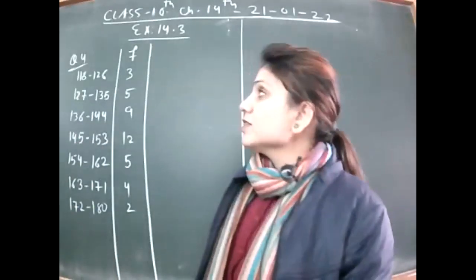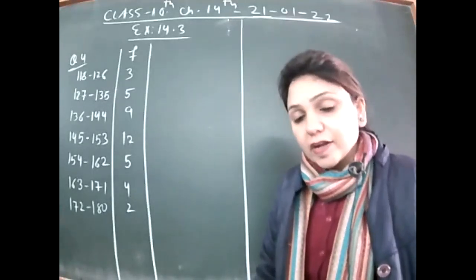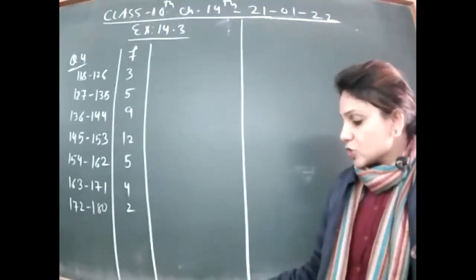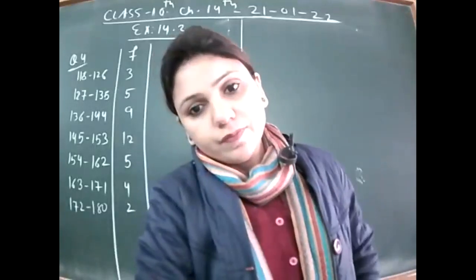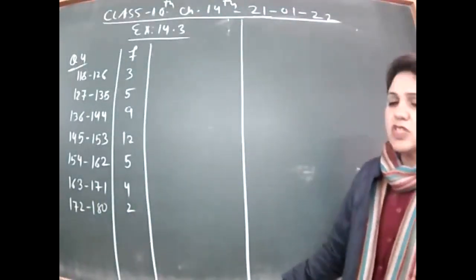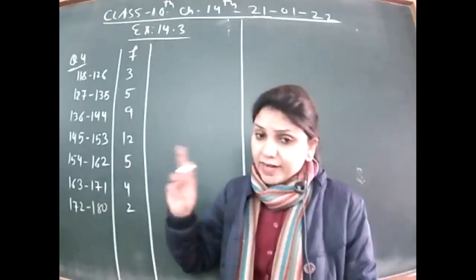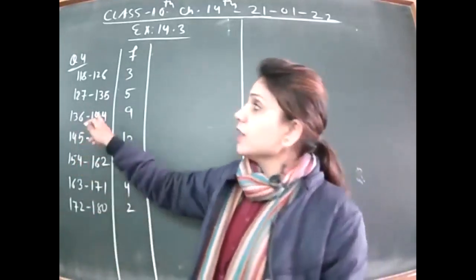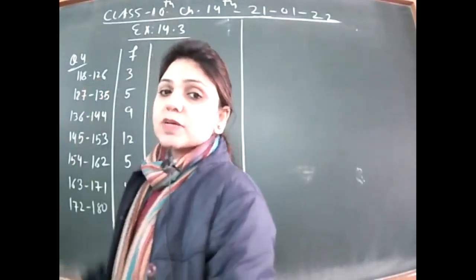Whenever you are finding a measure of central tendency where L, the lower limit of the interval, is needed — as in the median formula — you must convert the intervals into exclusive form. In the median formula, L is required, so we will first change these intervals into exclusive form by subtracting 0.5 from the lower limit and adding 0.5 to the upper limit.